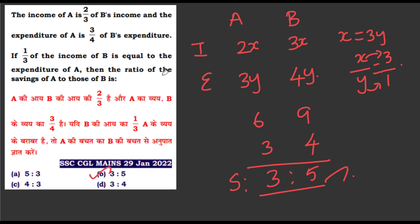So the answer is 3 is to 5. When solving, be careful — sometimes the question asks A to B and sometimes B to A savings ratio. If it's B to A, the saving ratio becomes 5 is to 3. So check the options carefully to avoid careless mistakes.